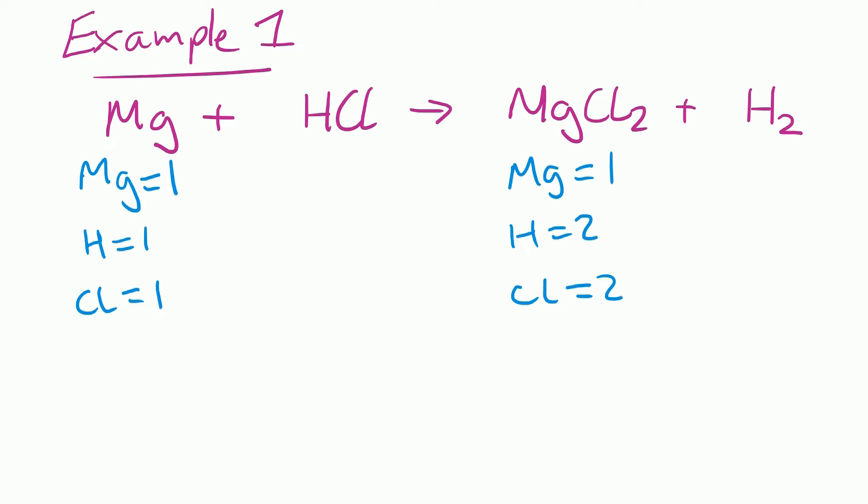So we need to do some balancing. We need to get the Hs correct, so we put a big two in front of HCl and that gives us two Hs. You'll notice it's also changed the Cls, because it's multiplied HCl — so we've now got two Cls on the left as well, which is what we needed. Final check: one Mg on each side, two Hs on each side, two Cls on each side. That one is now correct.